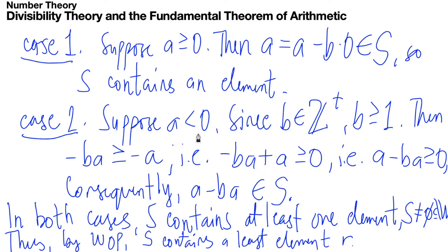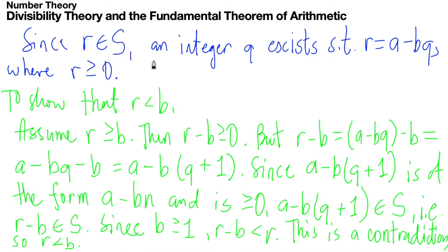For case 2, suppose A is a negative integer. Since B is a positive integer, we have that minus BA is greater than or equal to minus A. That is, A minus BA is greater than or equal to 0, so A minus BA is an element of S. In both cases, S contains at least one element, so S is a non-empty subset of the whole numbers. By the well-ordering principle, S contains a least element R. Since R is in S, an integer Q exists such that R equals A minus BQ, where R is greater than or equal to 0.